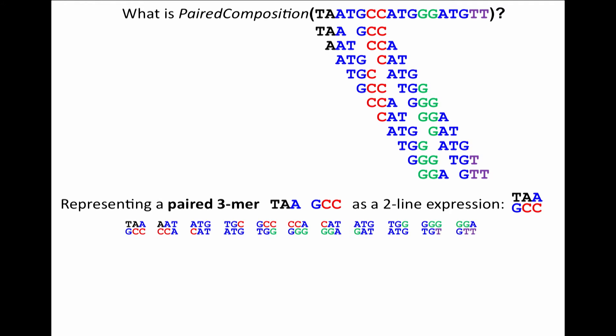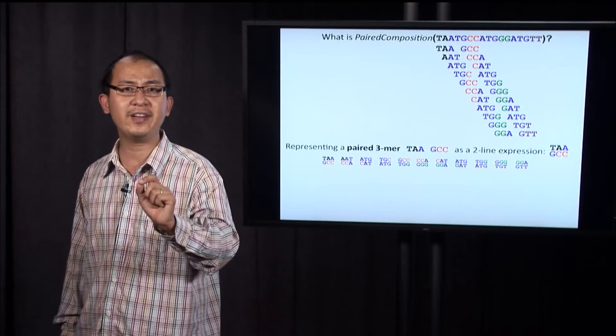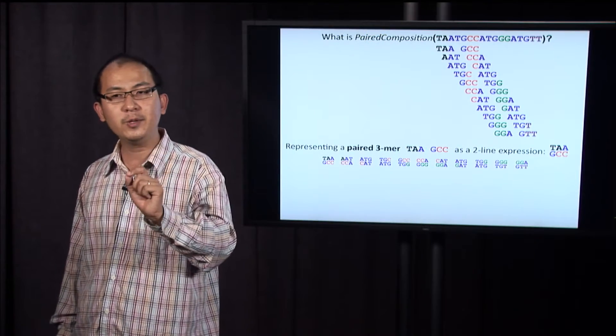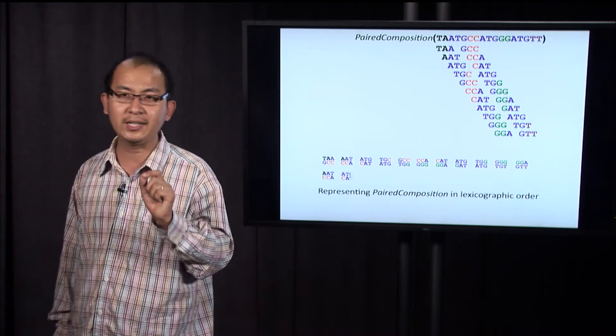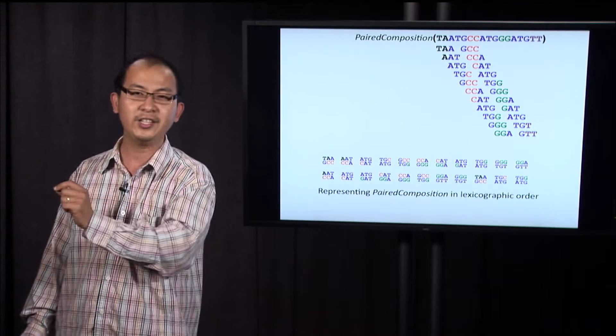We can order these paired k-mers in this order, which is the order that they were generated from the genome. But please note that the position information is not available. So a correct way to represent the paired k-mer composition should be in lexicographic order, like in a dictionary.